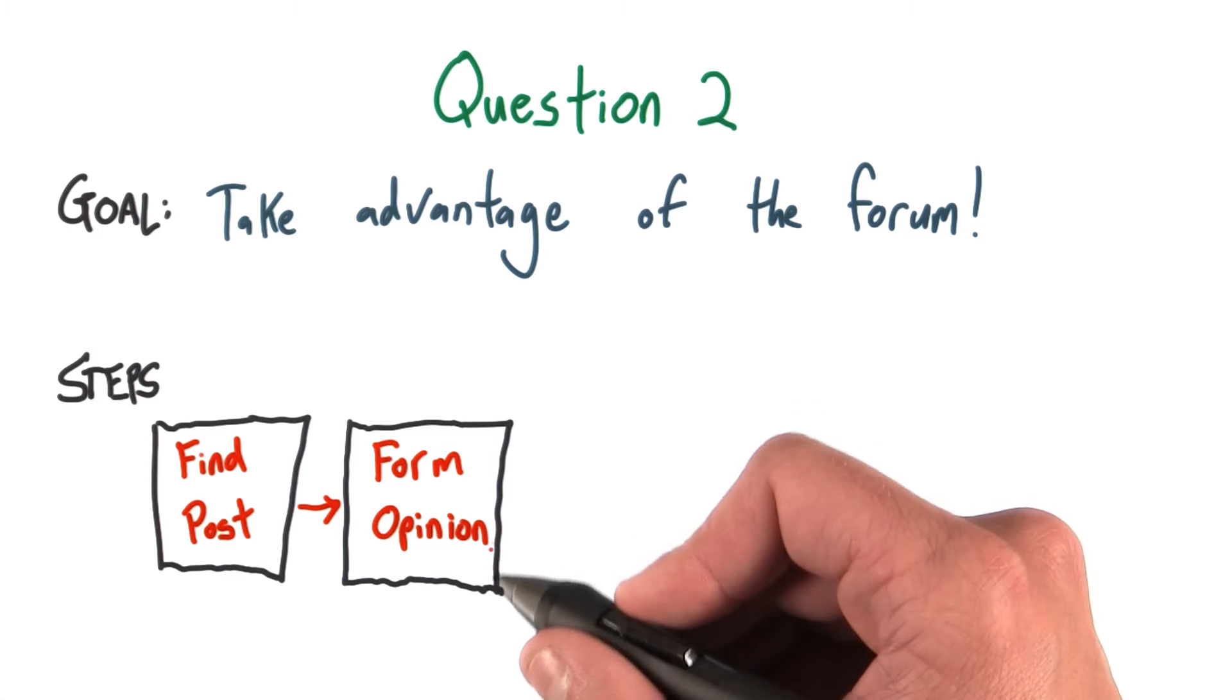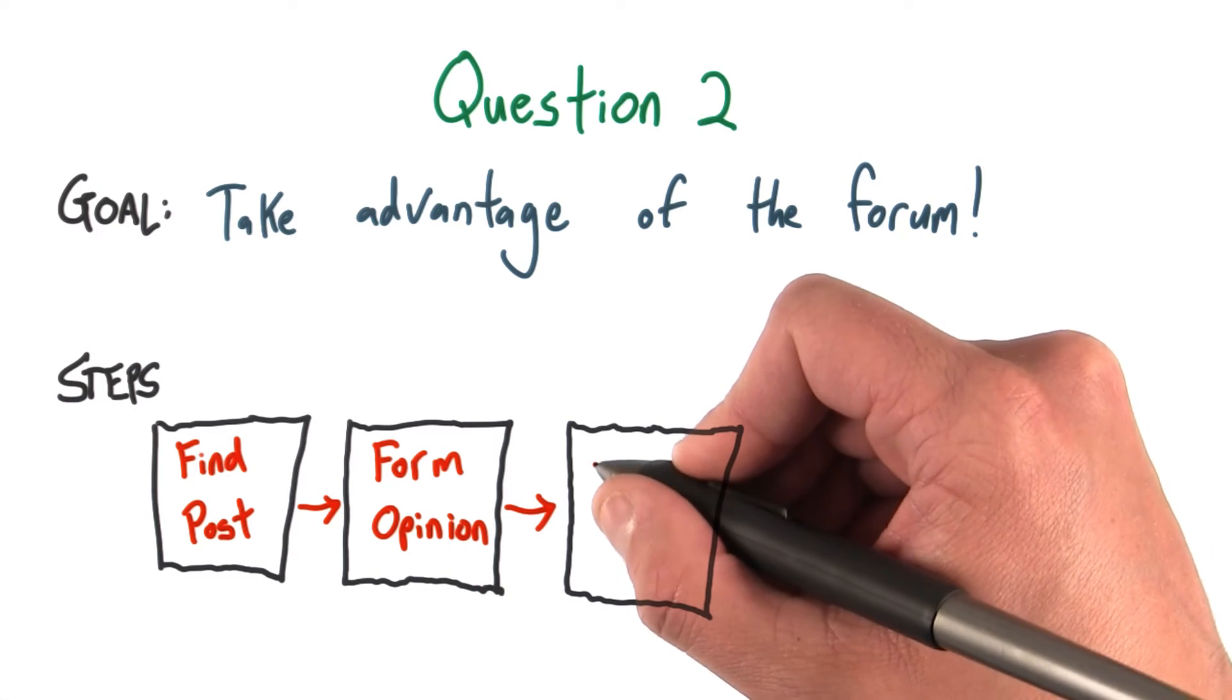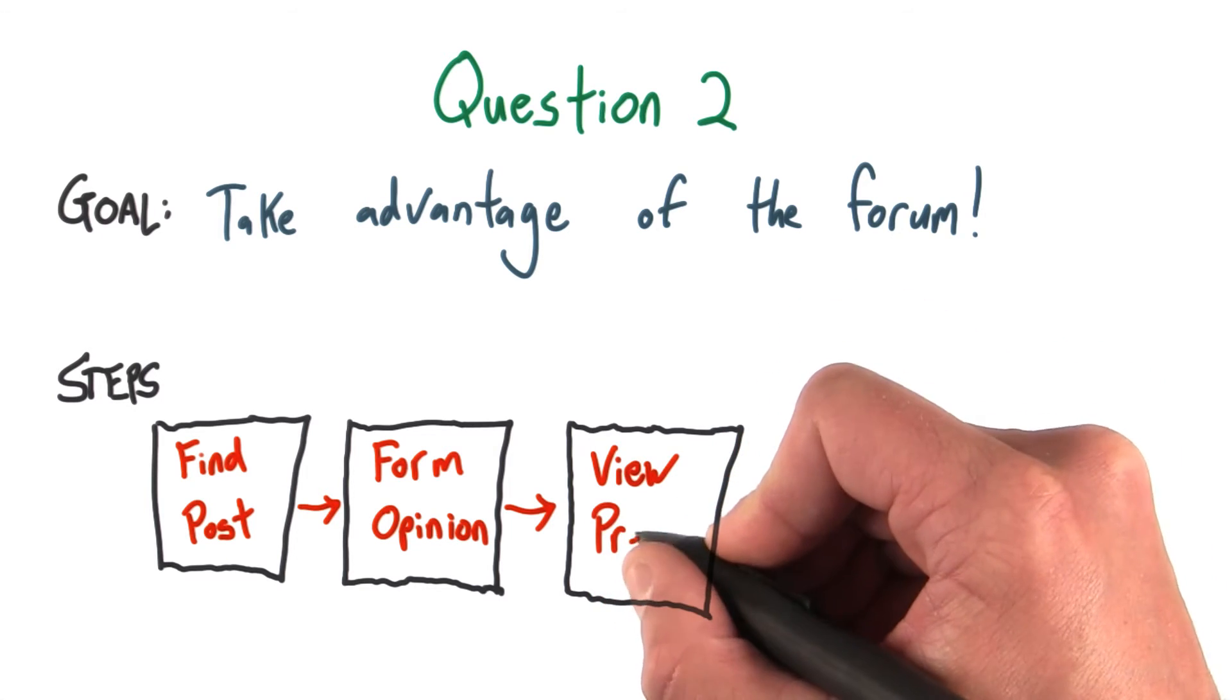Once you've figured these answers out for yourself, you can go on to step 3, which is actually to take a look at this other student's Prezi. You'll learn what they didn't like about this particular app and how they would fix it.